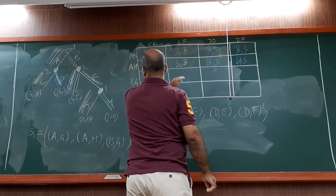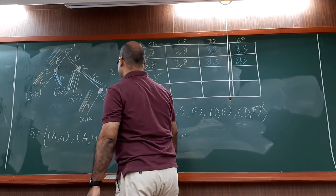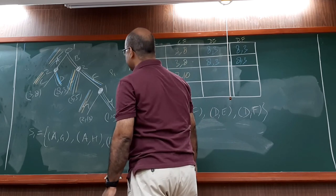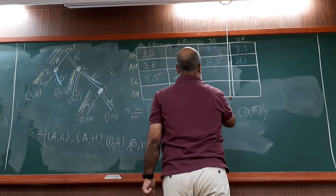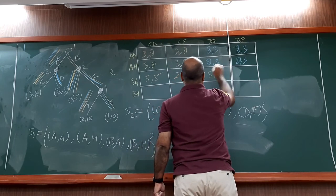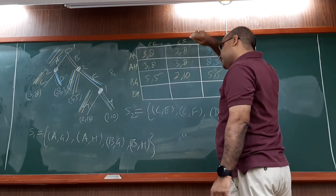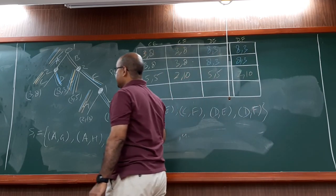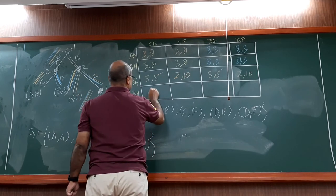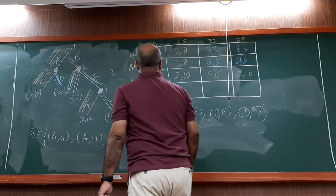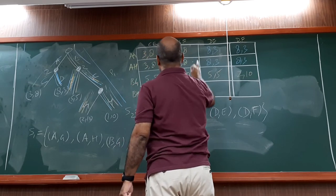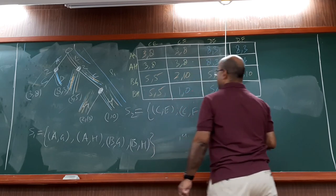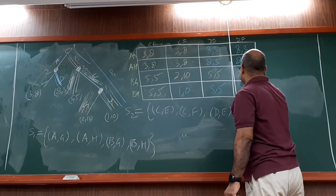B, G, C, F - that's 2, 10. B, G, D, E - 5, 5. B, G, D, F - 2, 10. B, H, C, E - 5, 5. B, H, C, F - 2, 10. B, H, D, E - 5, 5. Last one - B, H, D, F - 1, 0.